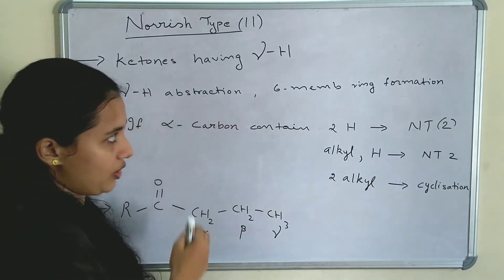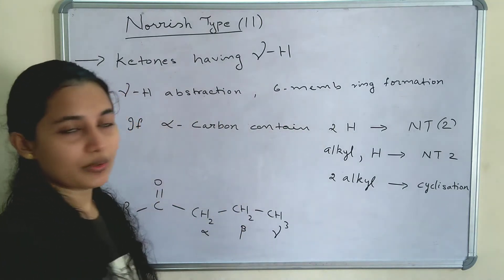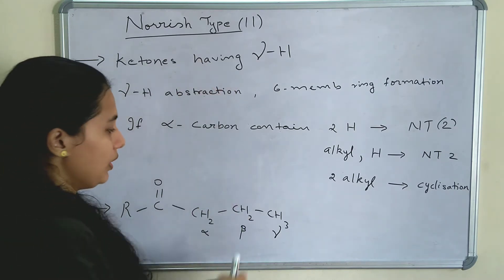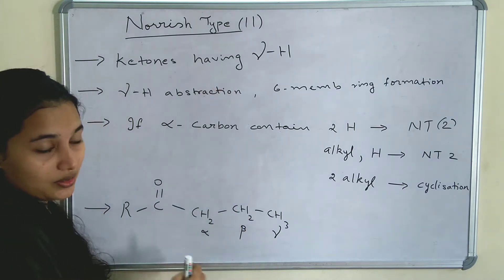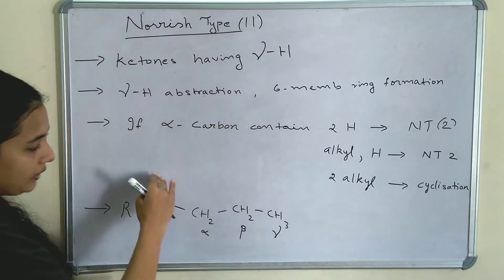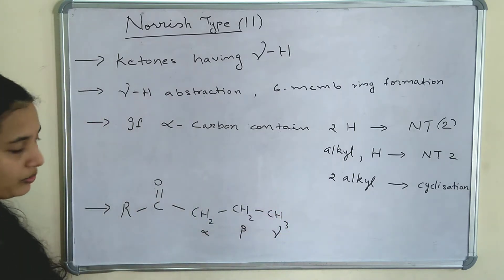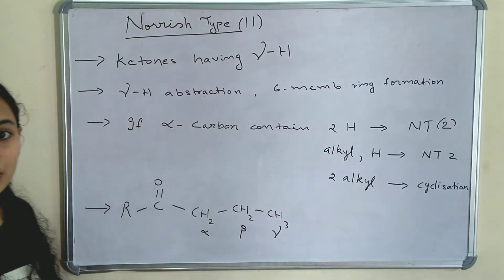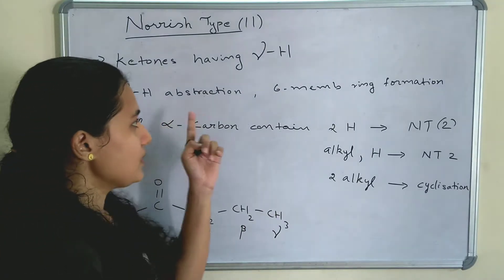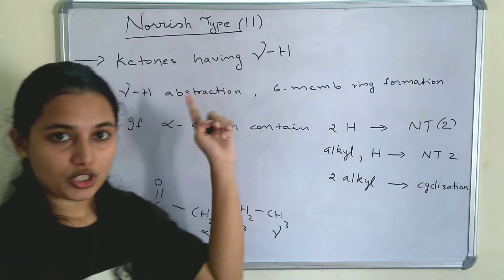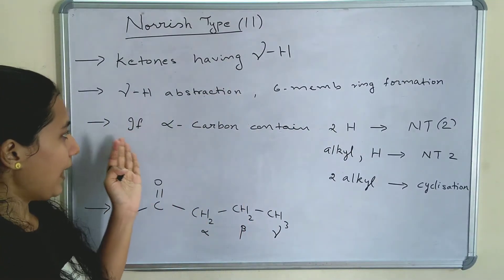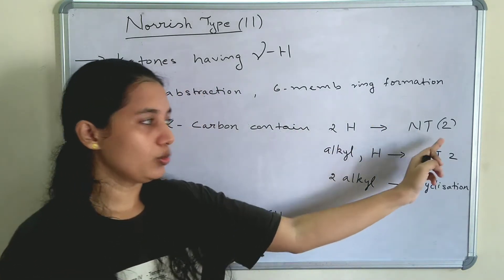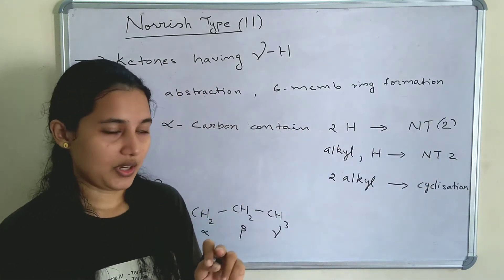Gamma hydrogen abstraction or 6-membered ring formation takes place in Norrish type 2 reaction. This gamma hydrogen can be abstracted and this will form a 6-membered ring — 1, 2, 3, 4, 5, and a 6-membered ring is formed. If the alpha carbon contains 2 hydrogens, it will give Norrish type 2 reaction.